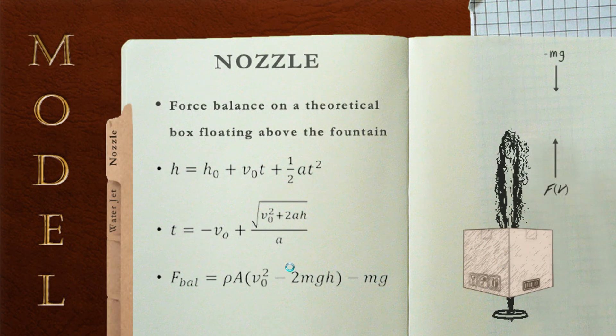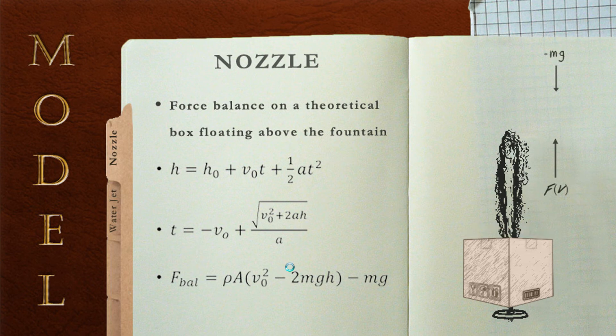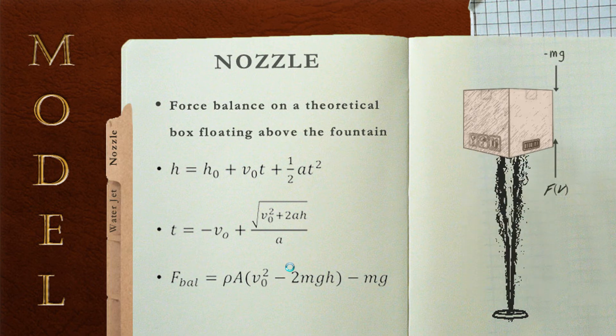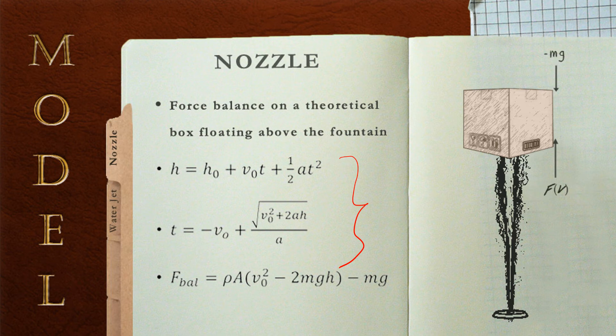Now that we have the velocity at the exit of the nozzle, we're going to look at the water from the nozzle exit to its height. It turns out to be pretty difficult to track the water just to its height, so one of the ideas we came up with is to track a theoretical box being pushed upwards by the force of the water below it, with gravity pulling it downwards. You can see the equations of motion on the left, and we were able to solve the force balance around the box in terms of height of the water jet.